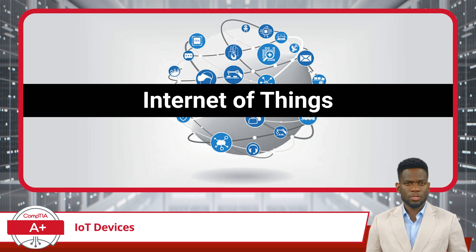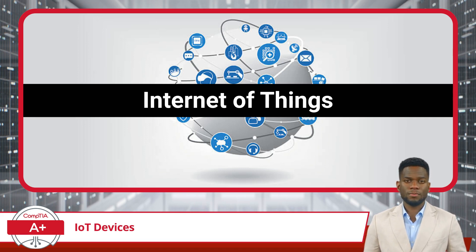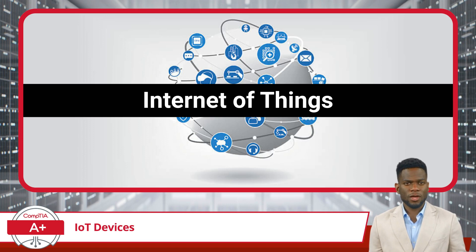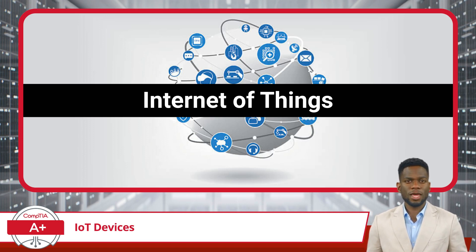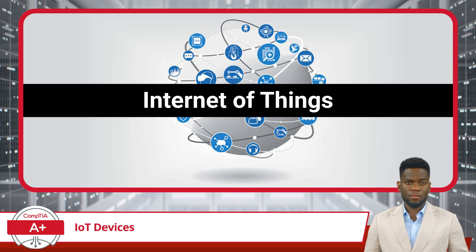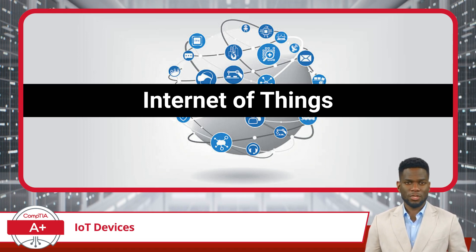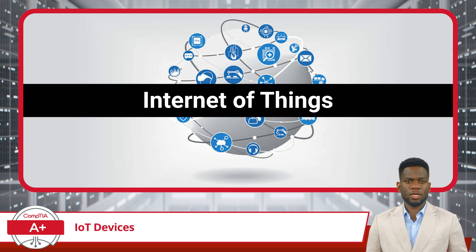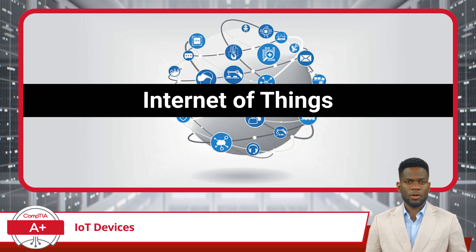The applications of IoT devices are remarkably diverse. In the realm of home use, they include appliances and home automation systems. In the automotive industry, modern cars are increasingly IoT-enabled. Other examples include IP cameras, streaming media devices, and even medical devices. Each of these IoT applications plays a crucial role in enhancing efficiency, convenience, and the overall quality of life, making them an integral part of our technologically-driven world.